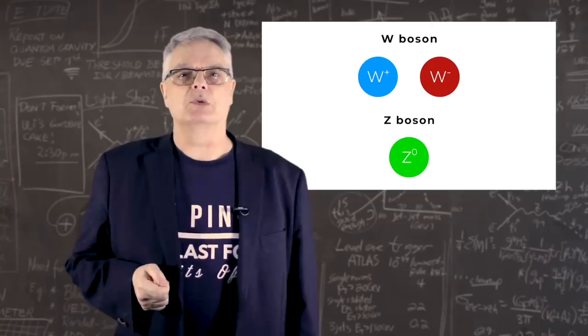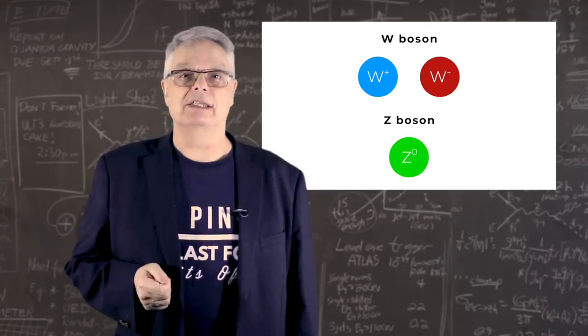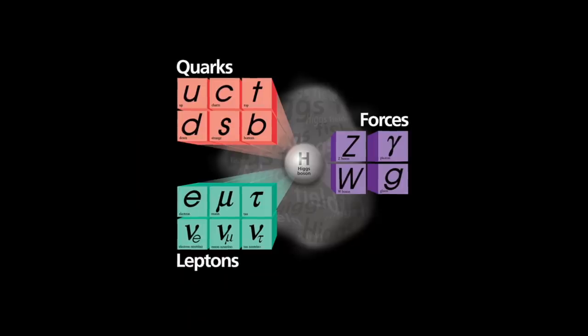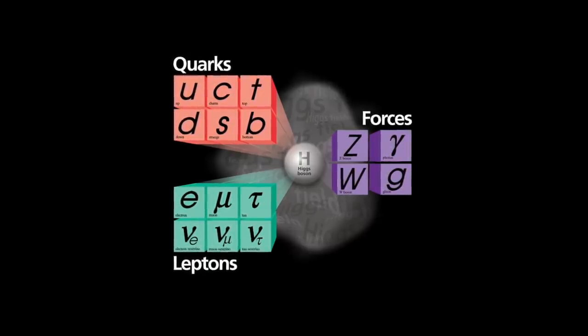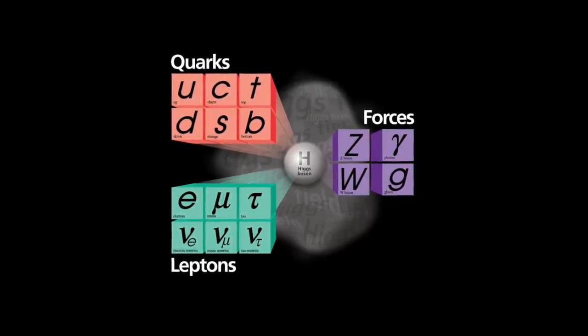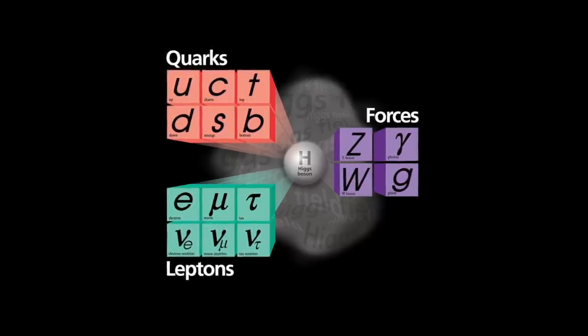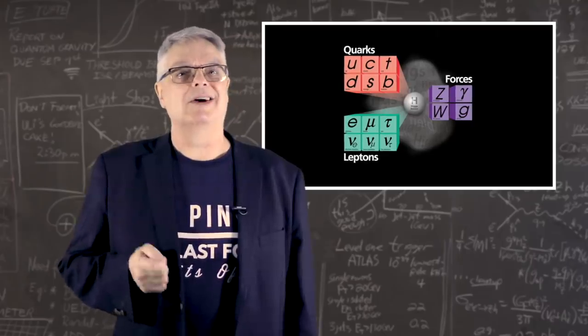The W and Z bosons were postulated in the 1960s and they were discovered at the CERN laboratory in 1983. Our modern theory, which we call the standard model, makes no predictions for the mass of either of these particles, or for that matter, any of the subatomic particles.